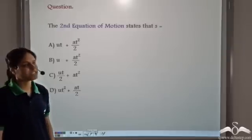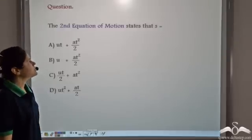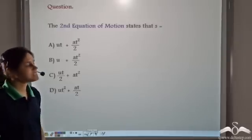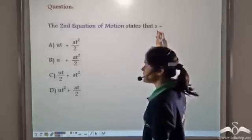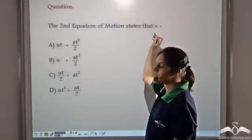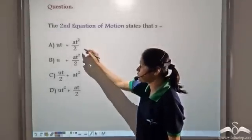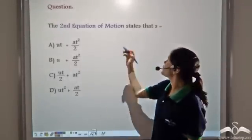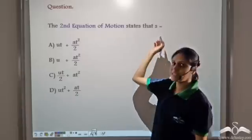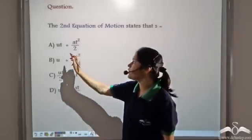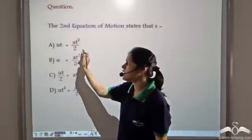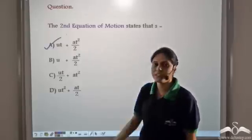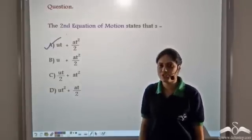Let us answer this question. The second equation of motion states that s, displacement, is equal to which of these? The second equation of motion states that s is equal to ut plus half at squared. So this is the correct option.